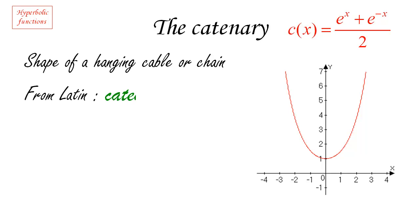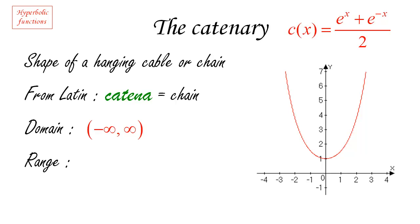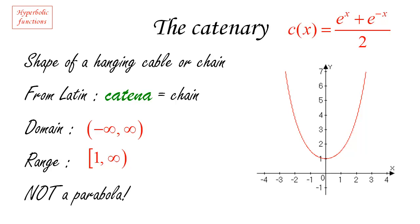What does catenary have to do with the name? It comes from the Latin — catena means chain. This function, studied at a time when people used Latin extensively, ended up with the name catenary. Now the domain of this function: looking at the formula, the domain is all real numbers, since I can compute e to the x and e to the minus x for any number. But looking at the range, everything is positive, and the smallest value the function can take is one, obtained at x equals zero. So the range is anything from one and up. Notice this may look like a parabola, but it's not — its formula involves exponential functions, not a quadratic.